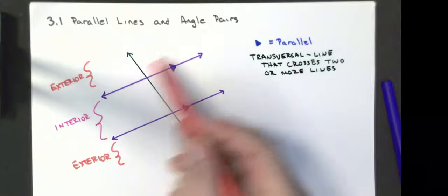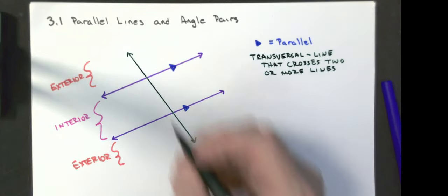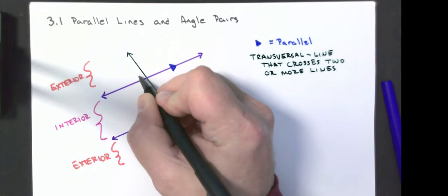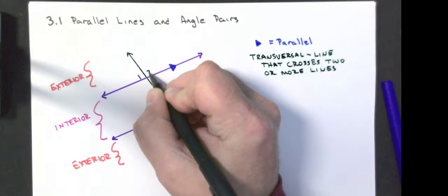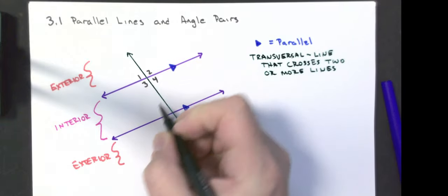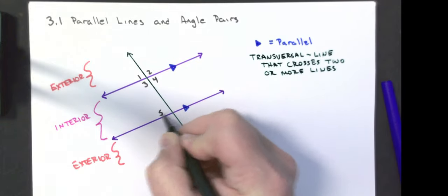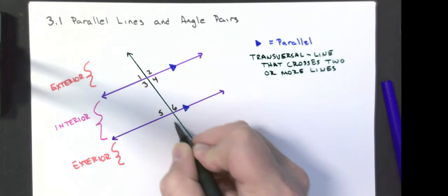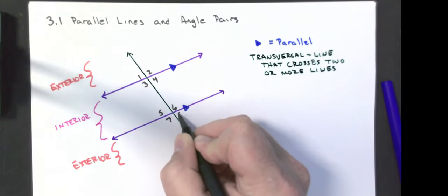When I have two lines cut by a transversal, I end up with eight different angles. I'm going to call them angle 1, 2, 3, 4, 5, 6, 7, 8.